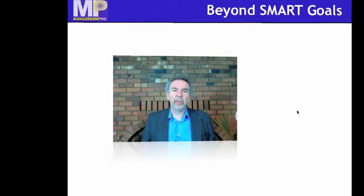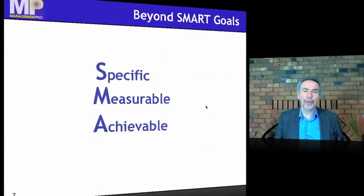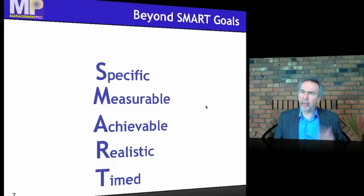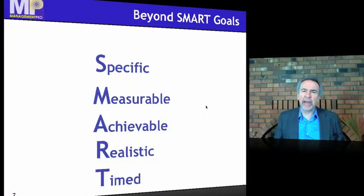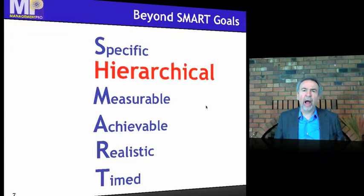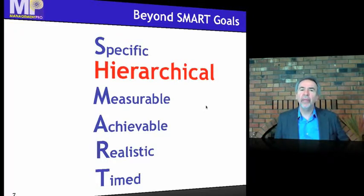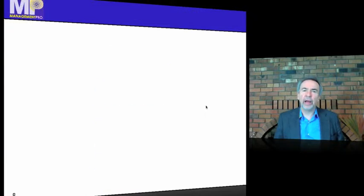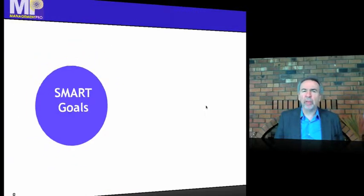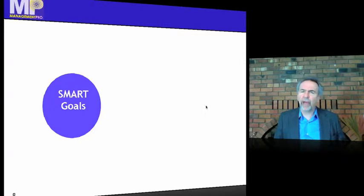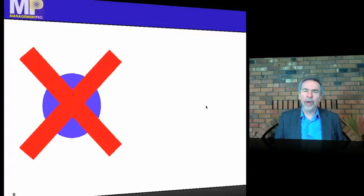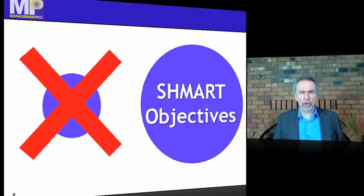So let's go beyond SMART goals — specific, measurable, achievable, realistic, in time. We're going to add something that really gives them power: the idea of hierarchical. Objectives need to be hierarchically related to each other using cause-effect, if-then logic. So we're going beyond SMART goals — obsolete, old fashioned, 20th century. We're introducing the concept of SMART objectives. Say that with me — it's just a lot of fun as it rolls off your tongue. SMART objectives.